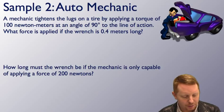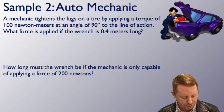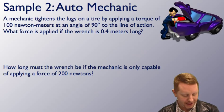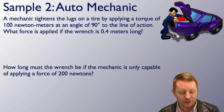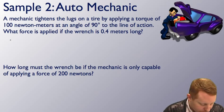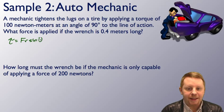Looking at our next problem, a mechanic tightens the lugs on a tire by applying a torque of 100 newton-meters at an angle of 90 degrees to the line of action. What force is applied if the wrench is 0.4 meters long?